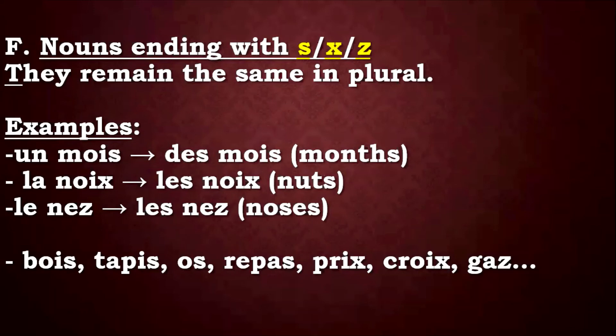Le nez, les nez. And we also have: bois, tapis, os, repas, prix, croix, gaz, etc. Most of these words have a silent final letter, so take notes. Anytime you mention them, check the sound before you pronounce it.